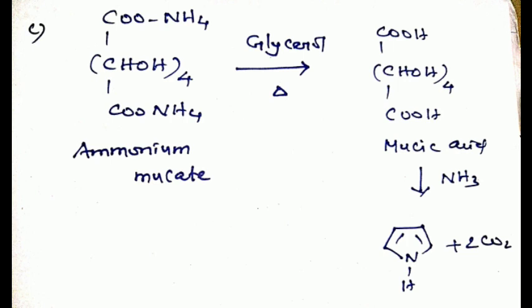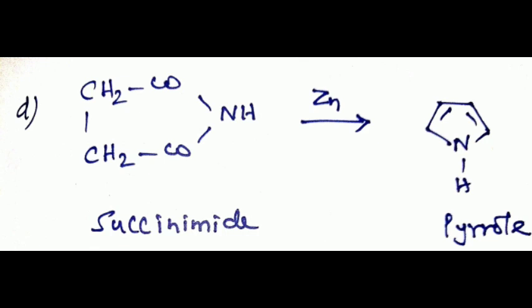From ammonium mucate and glycerol combined with one another at 200 degrees Celsius to form mucic acid, this mucic acid further combines with ammonia to form pyrrole with loss of carbon dioxide. Next one: succinimide is distilled with zinc dust to form pyrrole.